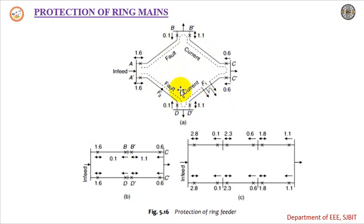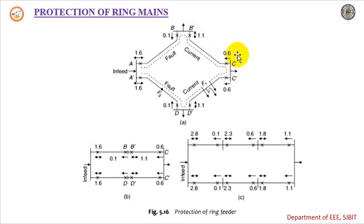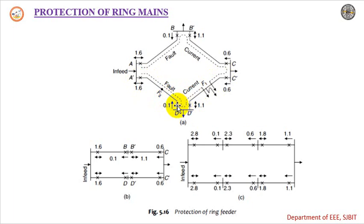In such a case, relay A is non-directional. The directional relay at B sees normal current flow so B will not trip. B' is non-directional. C is directional — since current is flowing in the normal direction, C will not trip; it would only trip if current flowed in the opposite direction. A' is non-directional. D is a directional relay — it would trip only if current flows in the specific trip direction, but now the current is flowing in the opposite direction, so D will also not trip.